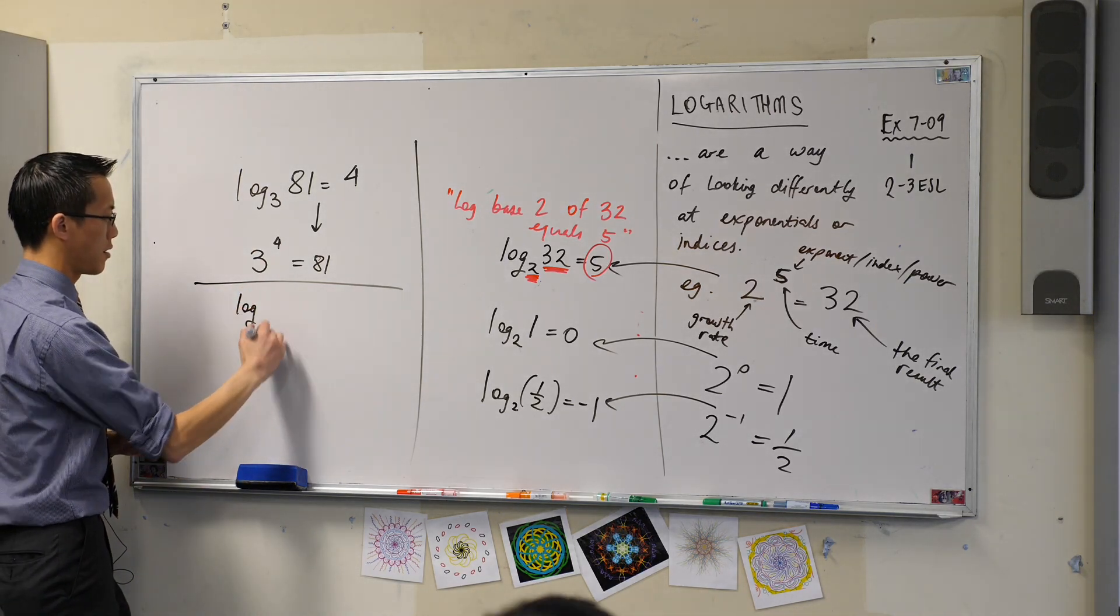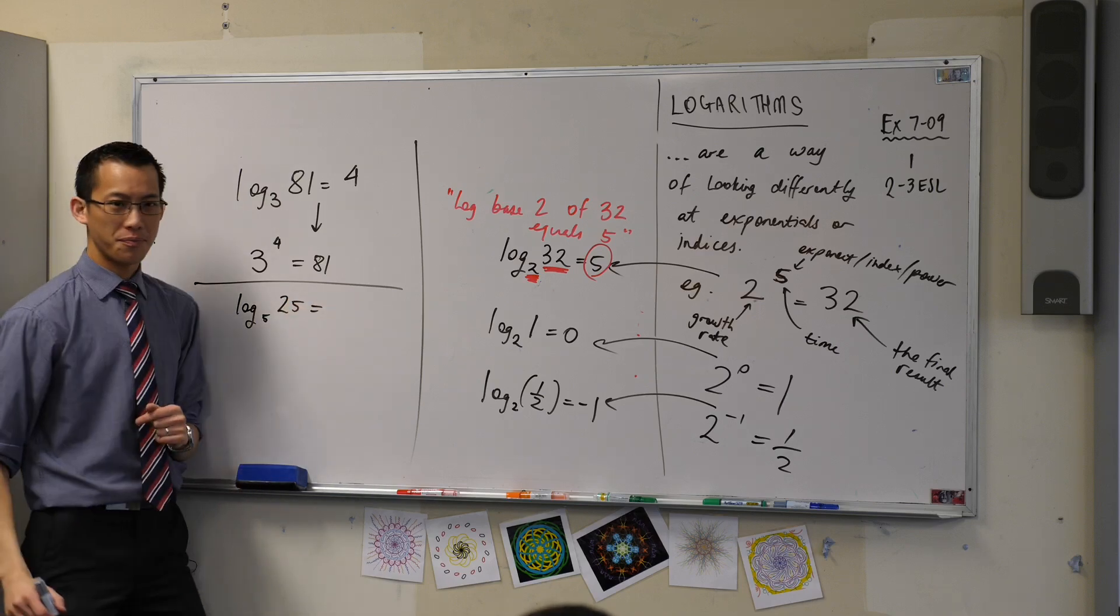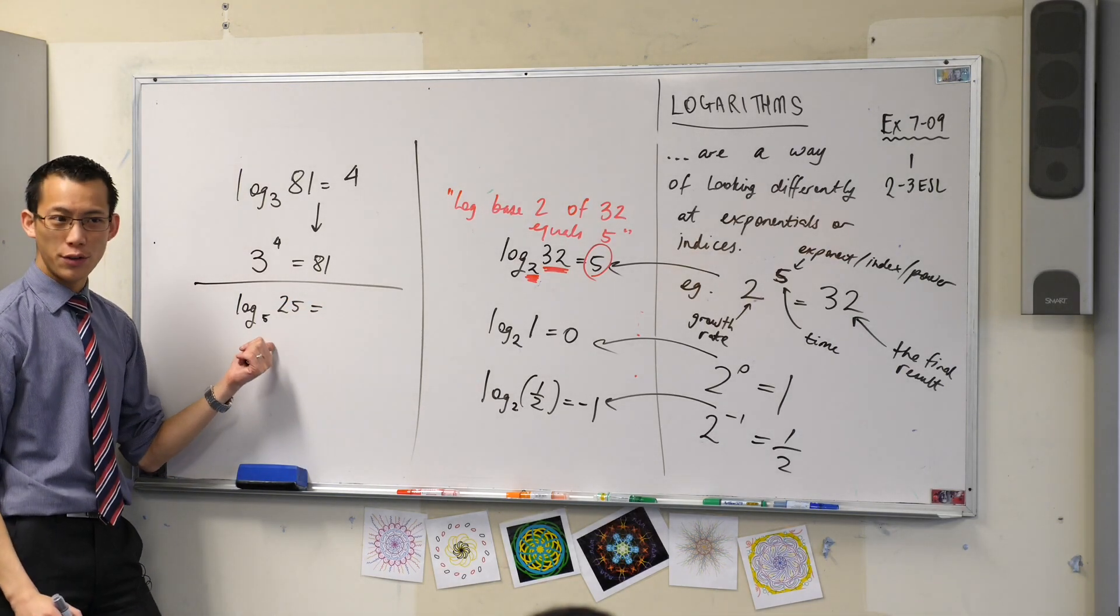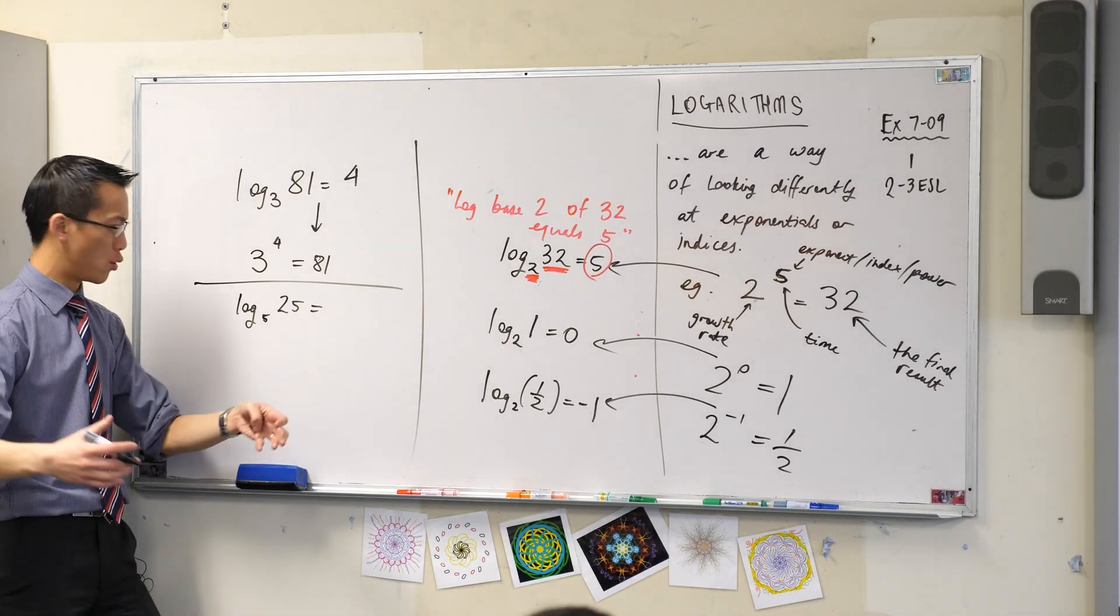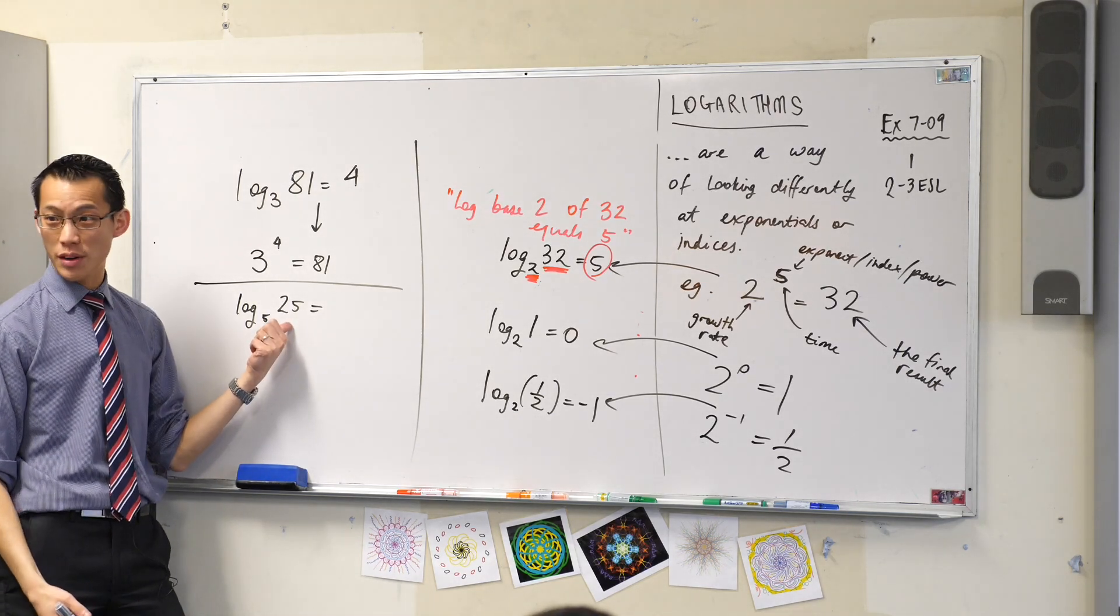How about log base 5 of 25? What's that going to be equal to? How long, if you're growing at five times, if you're quintupling each step of the way, how long will it take you to get to 25?